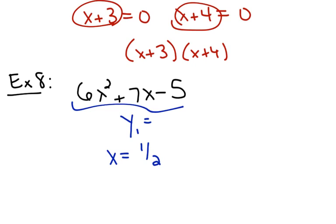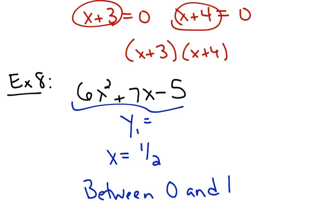If you look at the graph, I'm going to tell you another way of finding this. You'll notice that one of the places the graph hits is between 0 and 1. So go to second trace — this is called the calculate function. Number 2 says zero; hit enter on number 2. At the bottom of the screen it says left bound — type in 0 and hit enter. Then right bound — type in 1 and hit enter. Then it says guess — hit enter again. The graph says x equals 0.5, y equals 0. Well, 0.5 is 1 half.